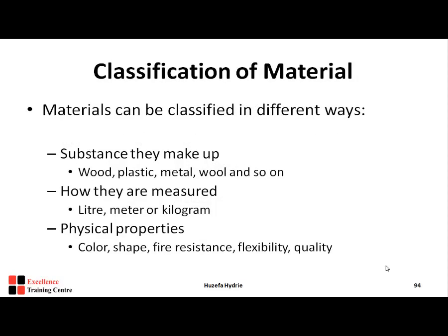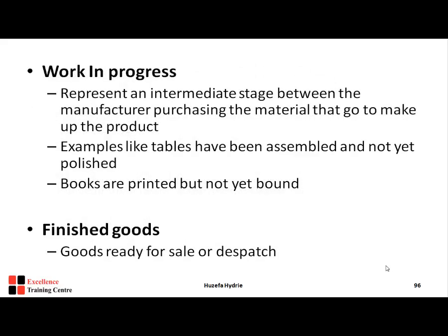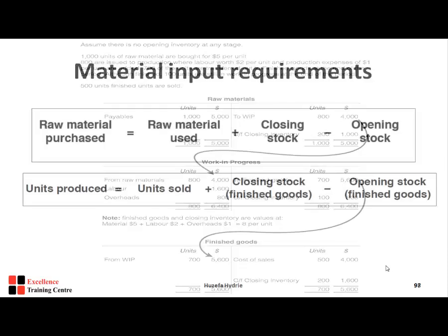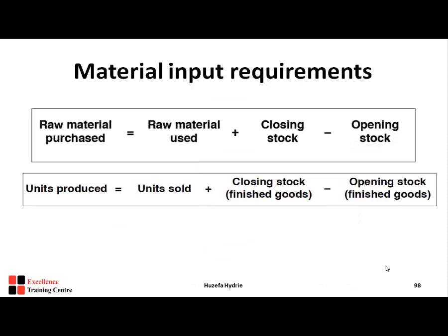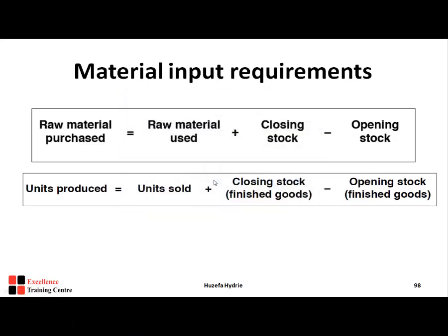We discussed how to classify material in three different ways: the substance they make up, how they are measured, and their physical properties. We also covered the three stages of material — raw material, work in progress, and finished goods — and the accounting double entries required for recording material movement.